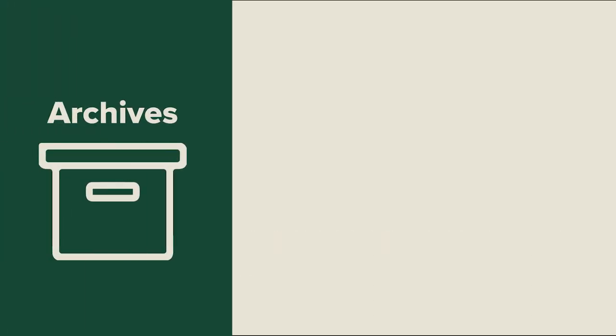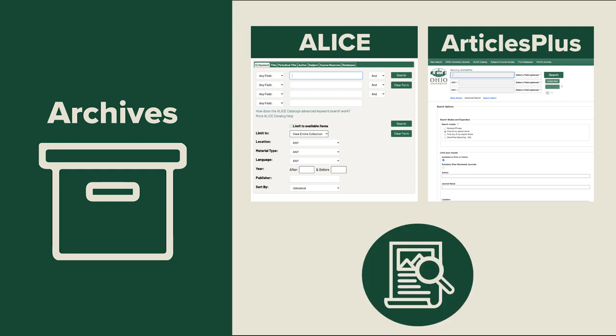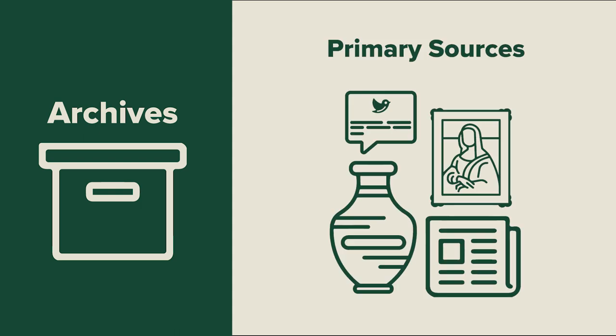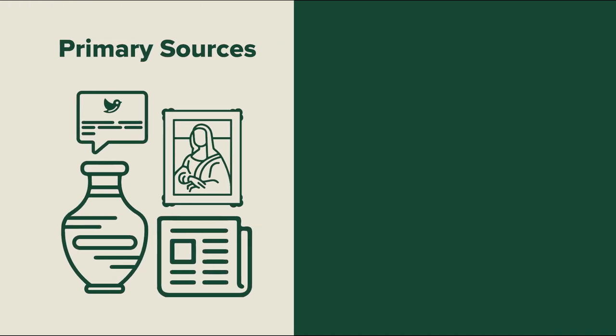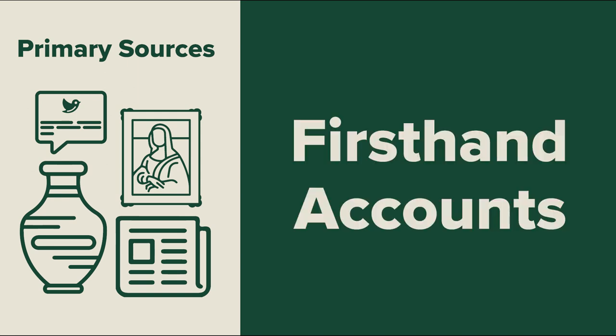The archives operate much like Alice and Articles Plus, as they are all sources for finding materials for research. What sets digital archives apart is that they specialize in primary sources. At their most basic, primary sources can be defined as first-hand accounts.